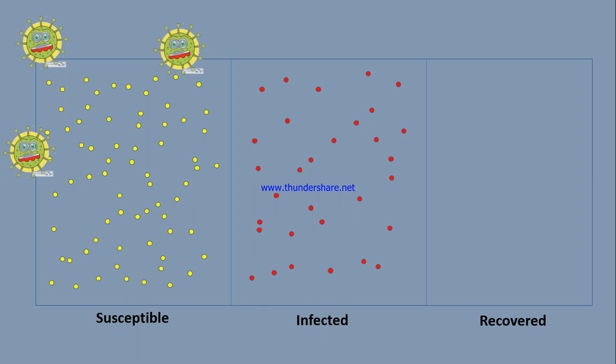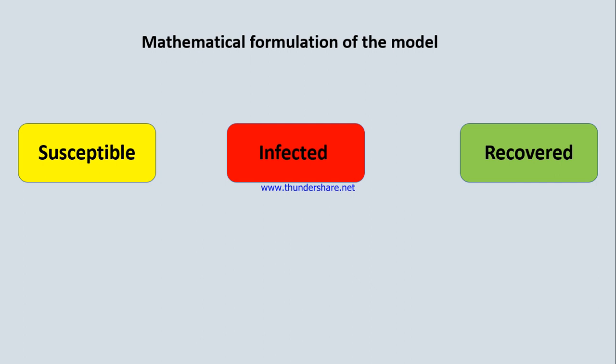Eventually, when infected people are treated with medicine or vaccines, they transition into the third phase — the recovery phase. We can then say these people are totally recovered and no longer able to infect others. This is how the SIR model works. The major first step is to mathematically formulate the model. We define a rate via which we predict how a person transitions from one compartment to another. The transition from susceptible to infected is denoted by beta.